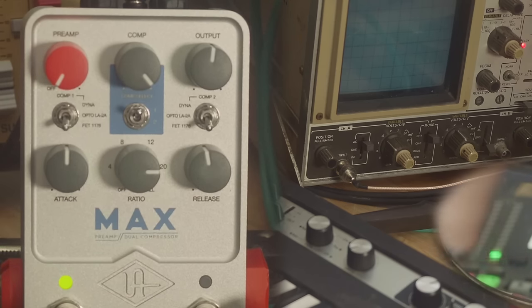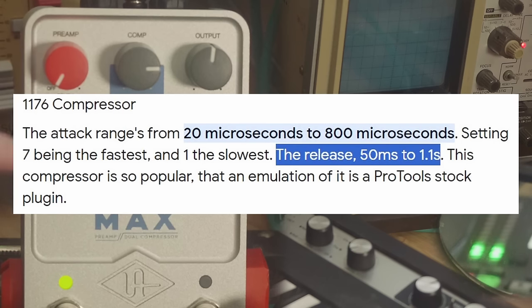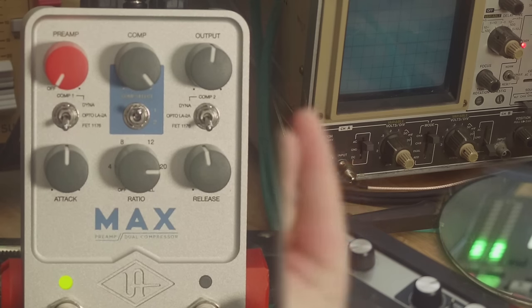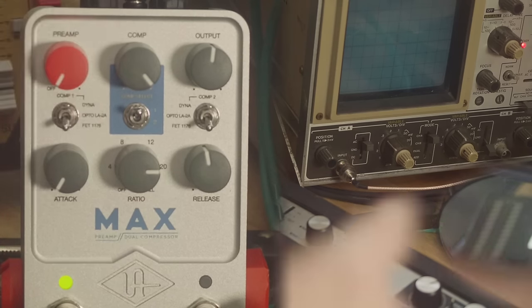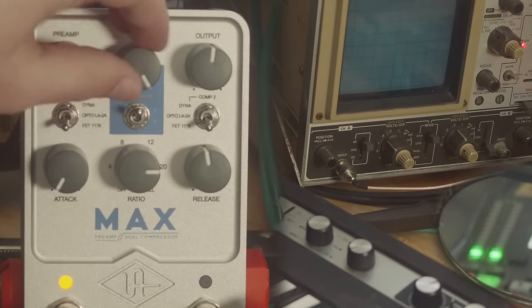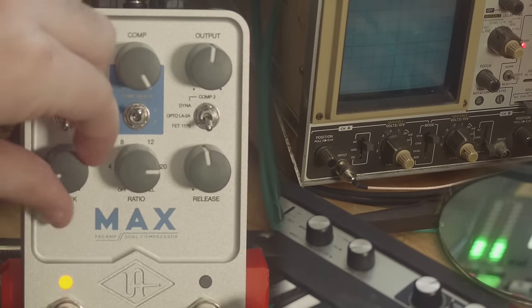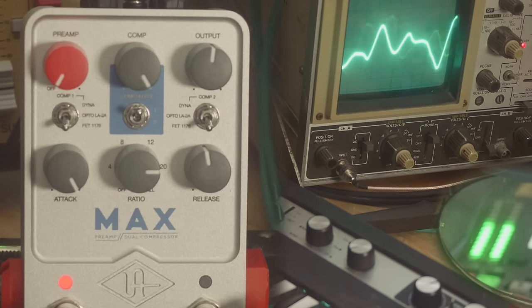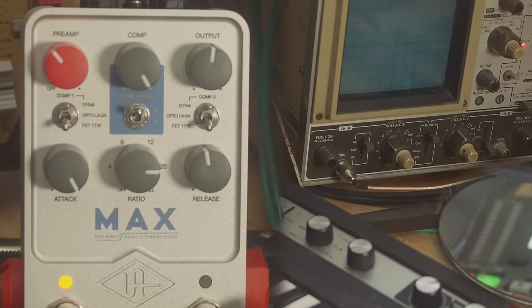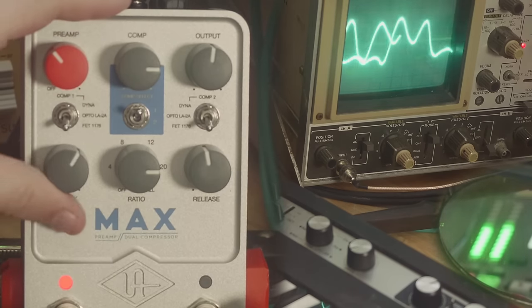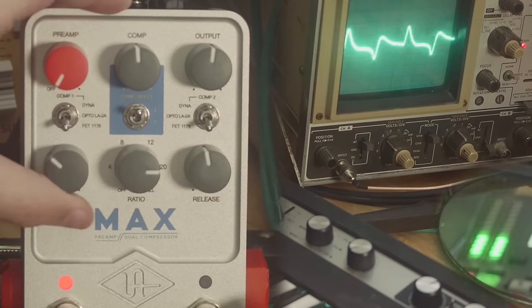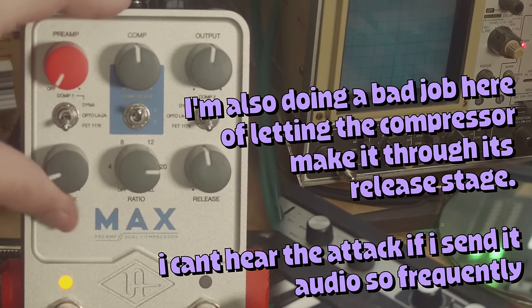Attack, in principle, is doing the same thing on the beginning of our sound instead of the end. After we've crossed our threshold, how quickly do we attenuate that signal? A little bit of your transient can get through with a relatively slow attack. It's very hard to demonstrate that on an 1176 because it's extremely fast. It's in microseconds. I can feel differences when I play on bass or guitar, and sometimes you can hear the transient making it through.